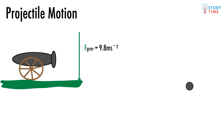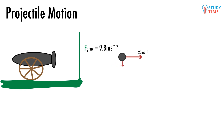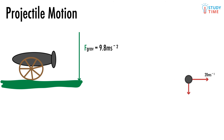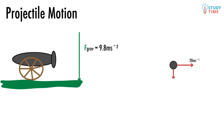Remember how we broke force vectors into horizontal and vertical components? We do the exact same thing in projectile motion with an object's velocity. Imagine that a cannonball has been fired horizontally off a cliff. The cannonball's overall motion is going to be made up of a horizontal part and a vertical part. The vertical velocity will be constantly changing because of the downwards acceleration of gravity. But the horizontal velocity — say, 20 meters per second to the right — won't change, because there's no horizontal force acting against it. Gravity is vertical, so the horizontal 20 meters per second just doesn't change.